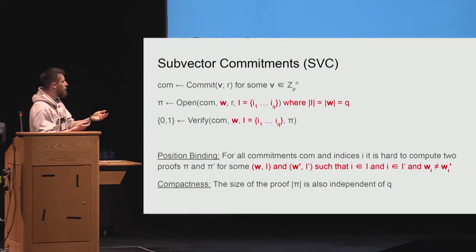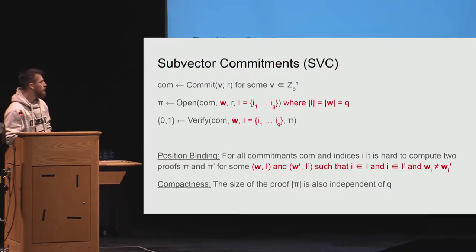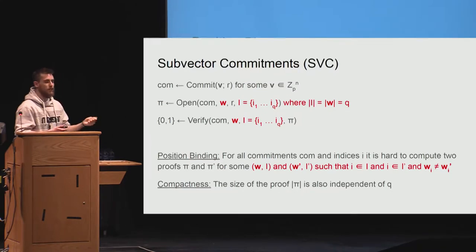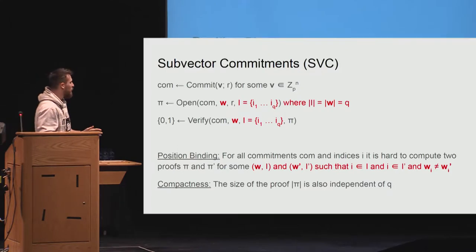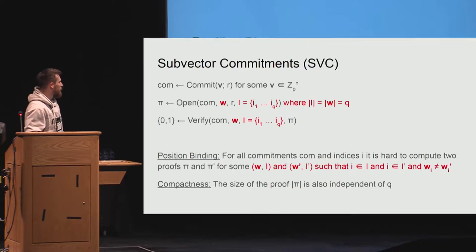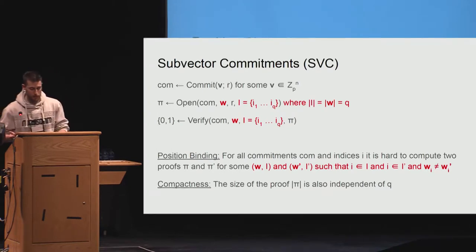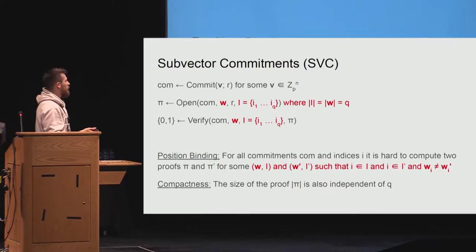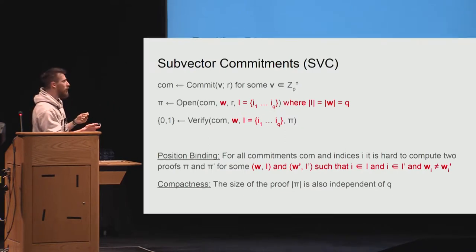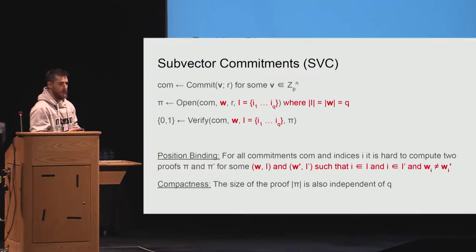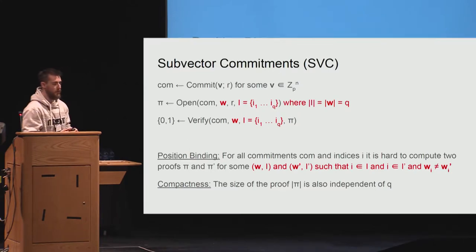Let me introduce the notion of sub-vector commitment. A sub-vector, throughout this talk, is just a subset of a vector. The commitment algorithm is the same. The only thing that changes is that the opening does not take a single position anymore, but a set of positions. Of course, you also input a sub-vector, and everybody can verify that the sub-vector is indeed those values at positions I_1 to I_Q.